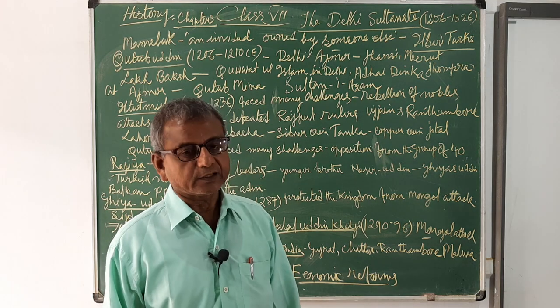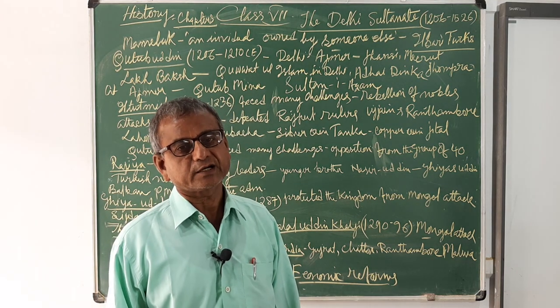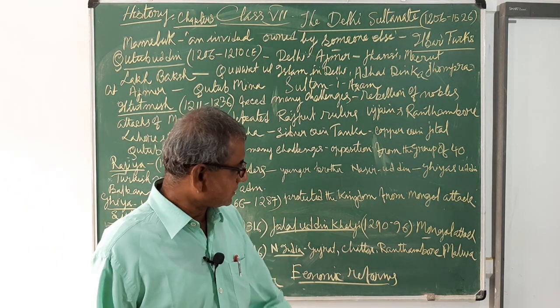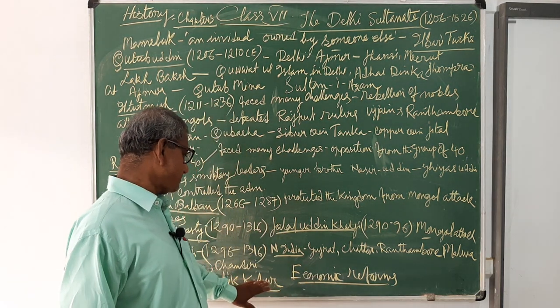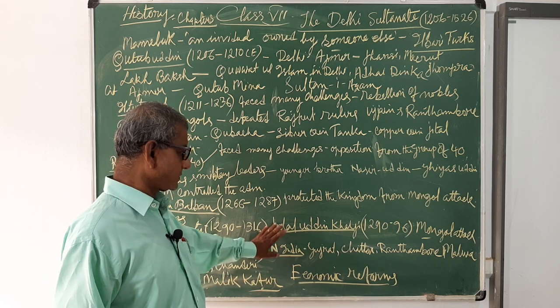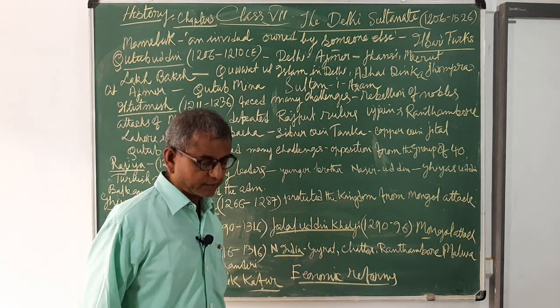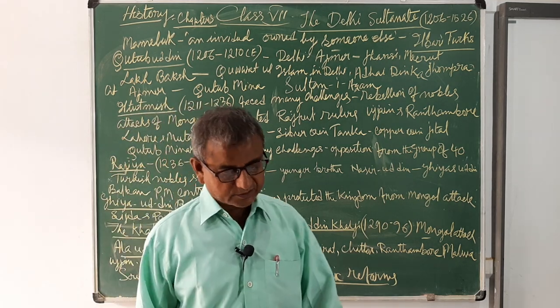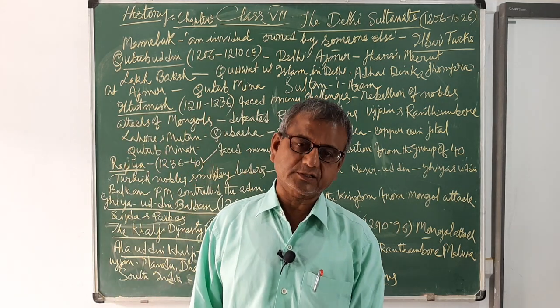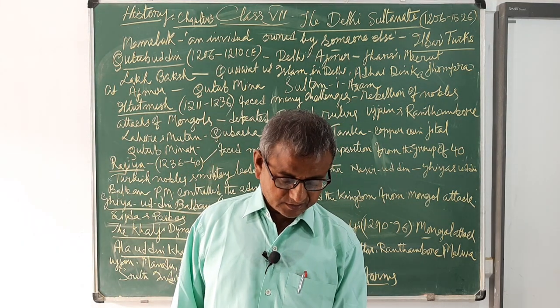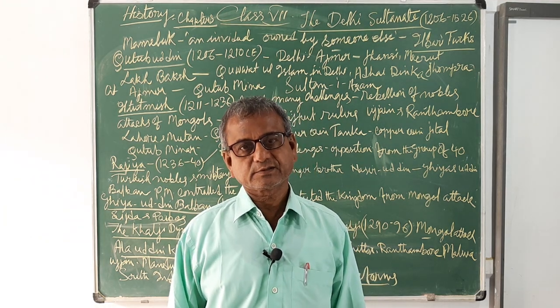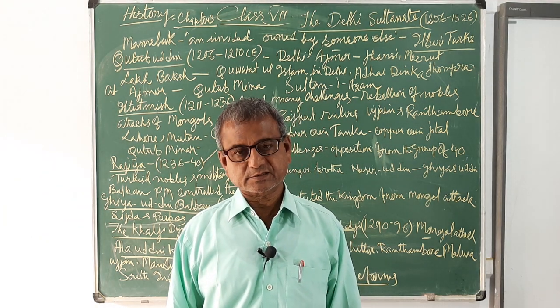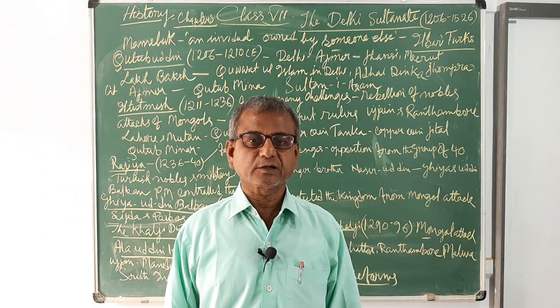Alauddin Khalji was the most powerful ruler of the Khalji dynasty. The next day I shall discuss the other rulers and dynasties. Thank you all.